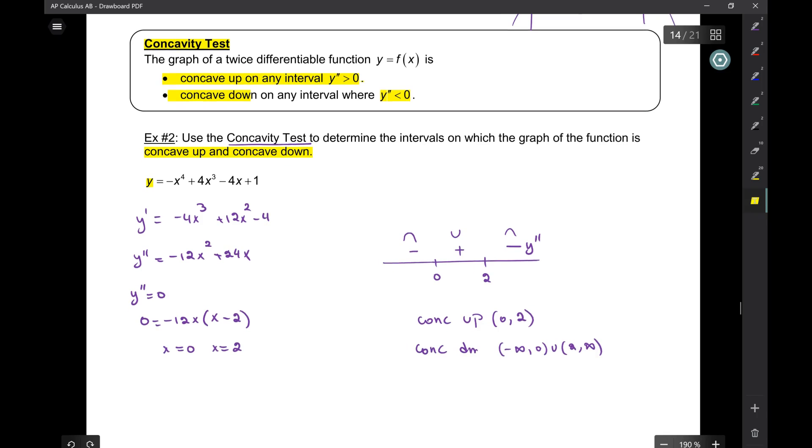So, here, we got 0 and 2. We put them on the number line. At 0, did the function change concavity? Yes, so it can be a point of inflection. At 2, did it change concavity? Yes, so it's a point of inflection.